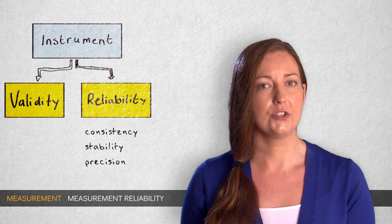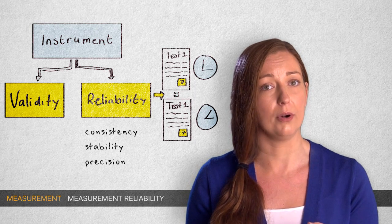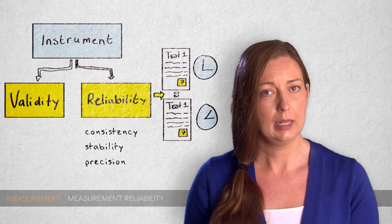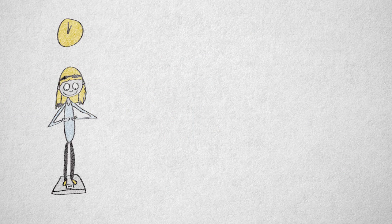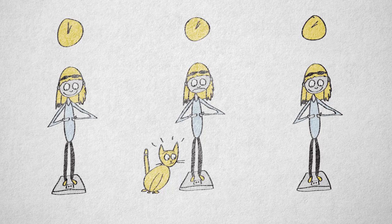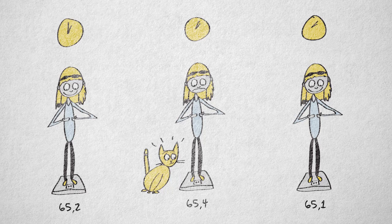A reliable instrument will result in highly similar scores if we repeatedly measure a stable property in the same person. My bathroom scale, for example, isn't perfectly reliable. If I step on it three times in a row, it will usually show two or three different readings. But as long as the readings differ by one or two hundred grams, the scale's reliability is good enough for me.